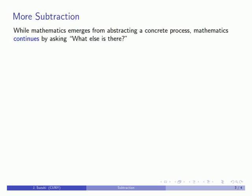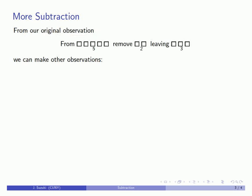Mathematics occurs when we make abstraction of a concrete process, but mathematics continues when we ask ourselves what else can we do. We might begin with our original observation: from this collection of cardinality 5, remove a collection of cardinality 2, leaving a collection of cardinality 3.